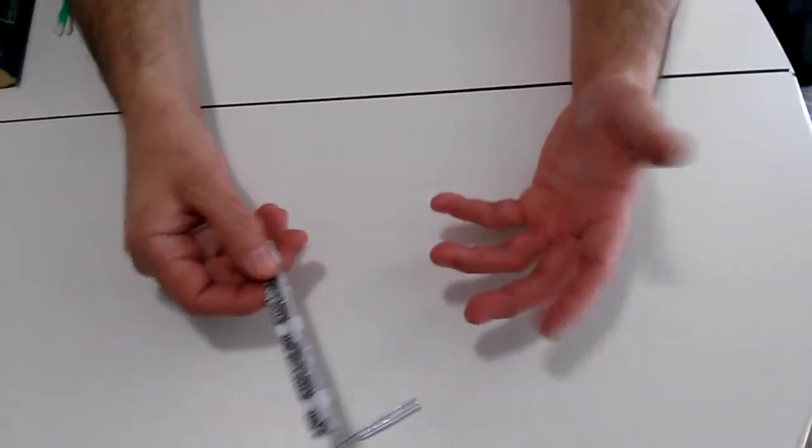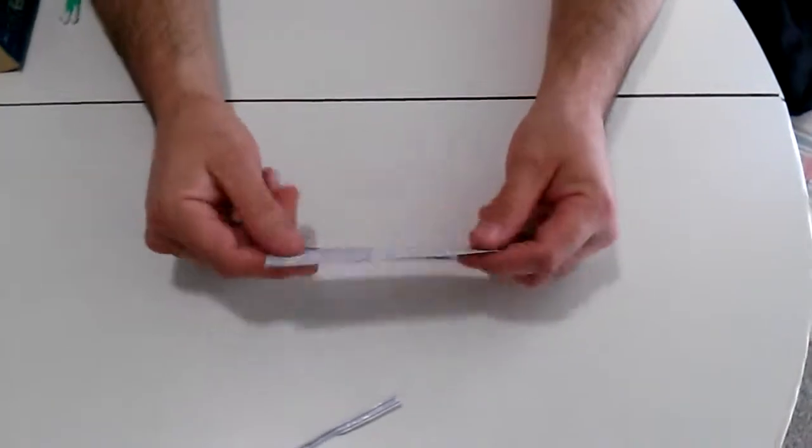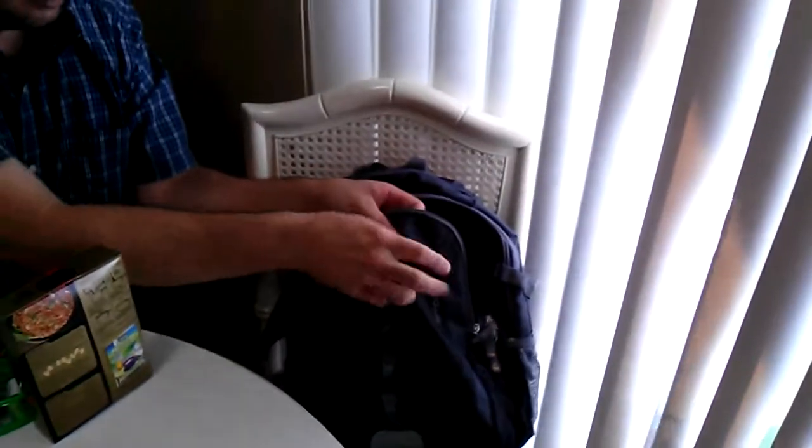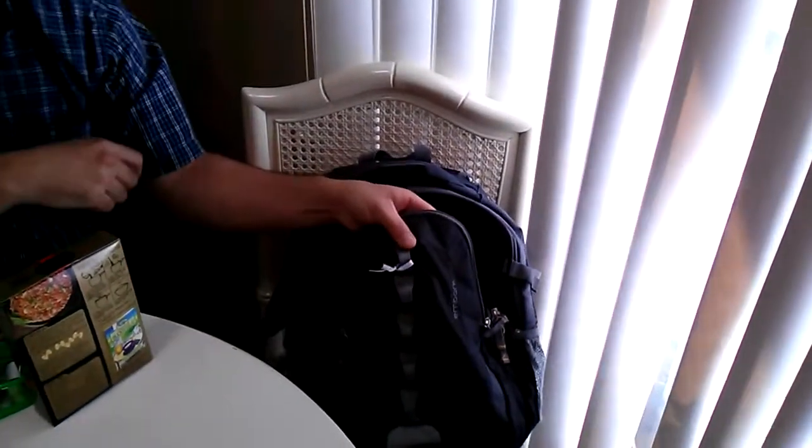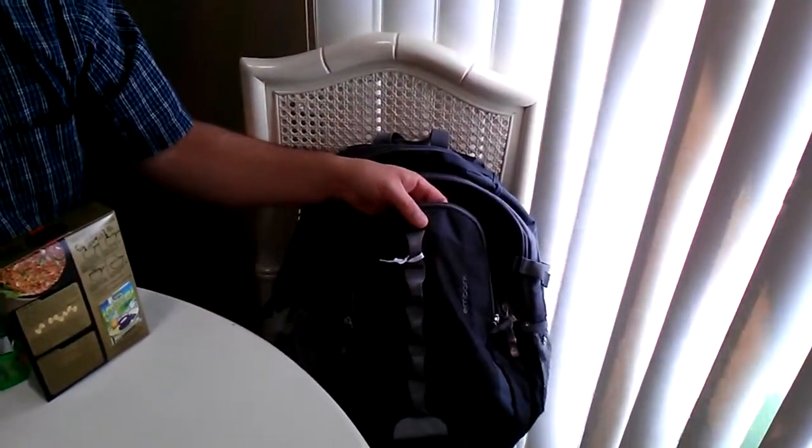Trash bag ties. Not quite sure all the uses these might have. If there's any of you out there that might know, please let me know. But the one thing I thought of was on the bug out bag I can use them to keep things on the outside of it, maybe keep them secure and hook them on there. That's one use I might be able to do with that.